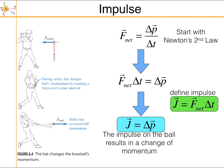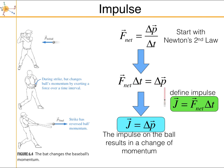Consider a ball coming in with some initial momentum toward the batter. The batter swings, and during the collision the bat exerts a force on the ball, resulting in a final momentum in the opposite direction. Newton's second law written as F net equals delta p over delta t means that exerting a force for a certain amount of time results in a change in momentum.